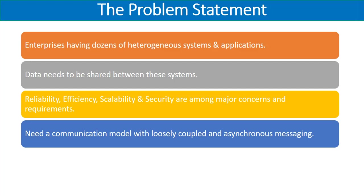Organizations also need to make sure they have a communication model which is loosely coupled and asynchronous in nature. In a typical synchronous communication scenario, whenever information needs to be communicated from one system to another, the consuming system must be alive. If there is no connection, downtime, or a problem on the other end, the data is going to be lost. Organizations with critical businesses — such as banking, financial, or telecom systems — cannot afford this type of data loss.